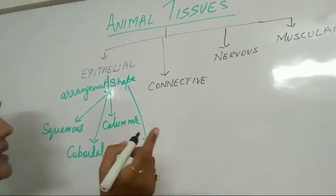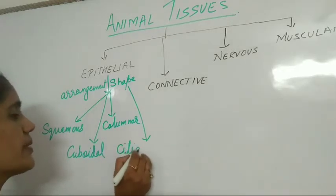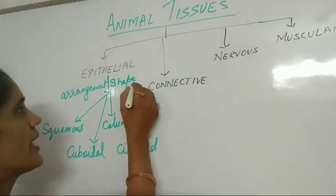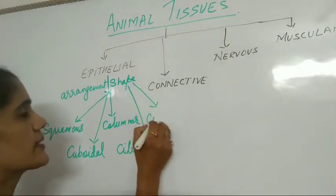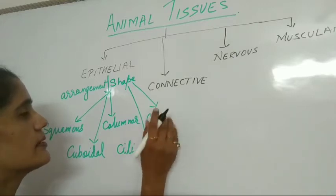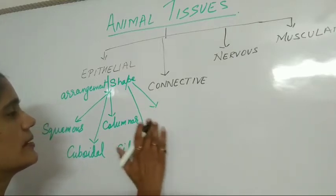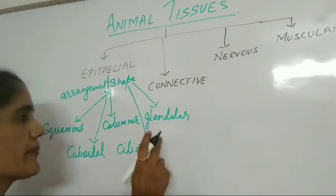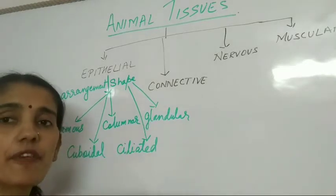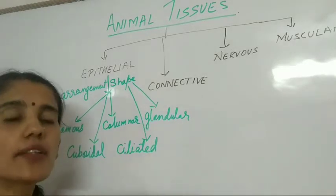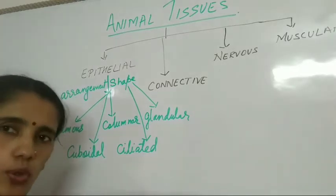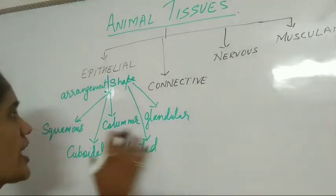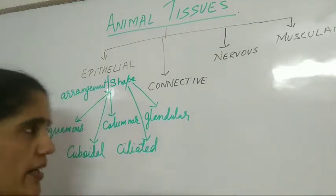Next is ciliated epithelial tissue. Ciliated means cilia — that is, a hair-like structure is present. And last is glandular tissue. Glandular means they function as a gland — they secrete secretions, they secrete fluid. So these are the different types of epithelial tissues, classified on the basis of their shape and arrangement.